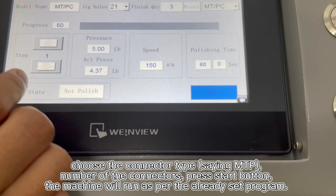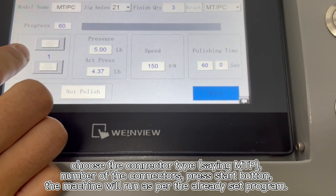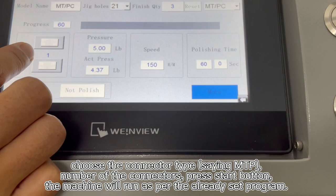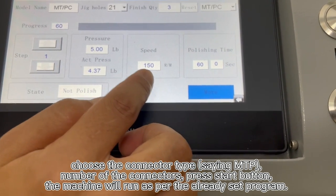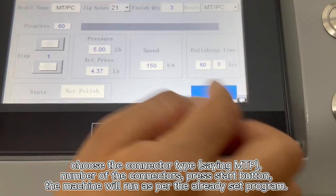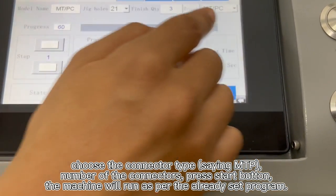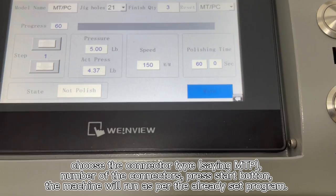This is the polishing time for each process. This is the different programs: Step 1, Step 2, Step 5. And this is the pressure for each position, speed for each position. This is the total time. And here you see the polishing progress.